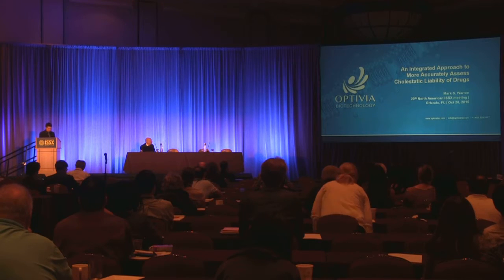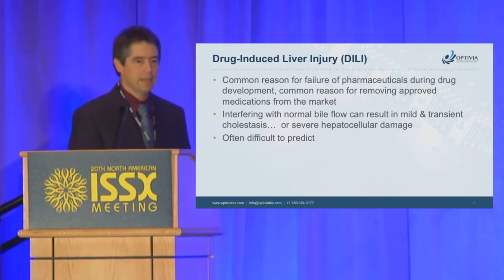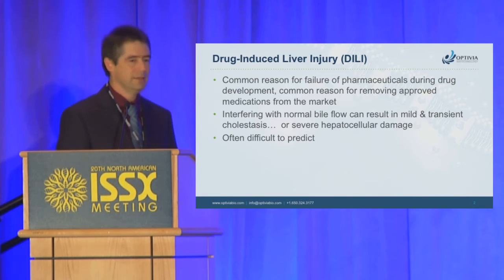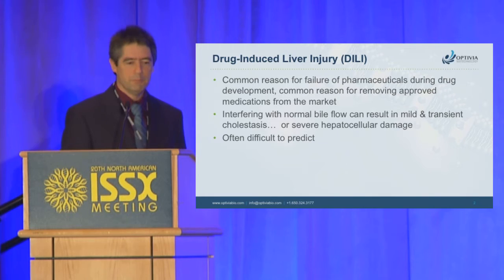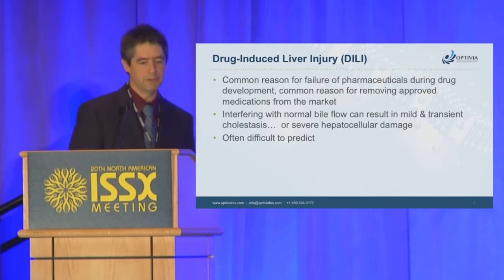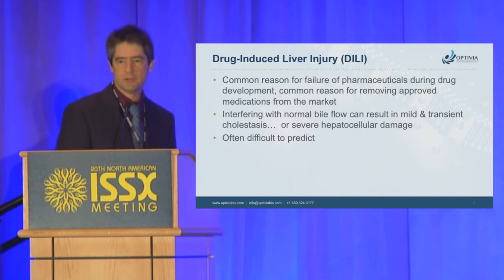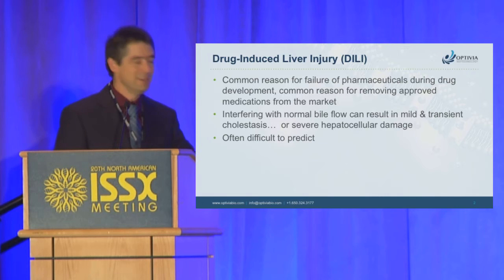Thank you very much, Les. I'm going to be talking about drug-induced liver injury. I really don't need to give much of an introduction to this audience, because if you look through the abstract booklet, probably the biggest keyword you'll find is DILI — drug-induced liver injury. It's the most common reason drugs in development fail, and the most common reason approved drugs on the market are removed. Cholestasis is simply anything that's going to interfere with the normal bile flow. This can cause a mild transient effect, or it can lead to something causing more severe hepatocellular damage. Drug-induced liver injury is often very difficult to predict.